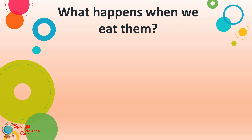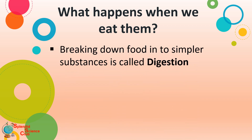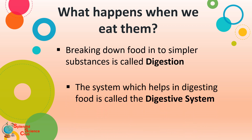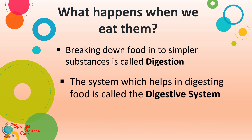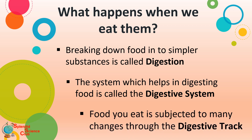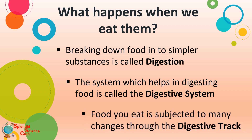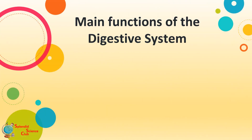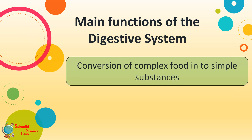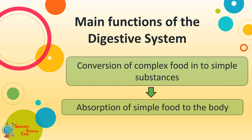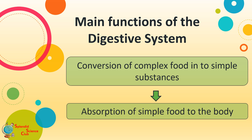This food, simply digested by the mouth, enters the other parts of the digestive tract, and a lot of changes happen along this path. So what is digestion? Breaking down food into simple substances is called digestion. The system in our body which helps in this function is called the digestive system. Complex food cannot be directly absorbed by the body, so it is first converted into simple substances, which are then absorbed.